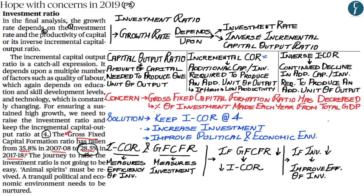The second solution given by the author is to increase investment in the Indian economy, and the third is to improve the political and economic environment. However, the author has not specified how these goals can be achieved. For your civil services examination — especially the 2019 prelims — keep in mind what is capital output ratio, incremental capital output ratio, gross fixed capital formation ratio, and the link between all three.